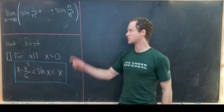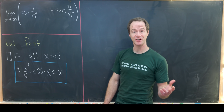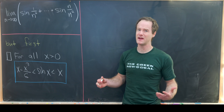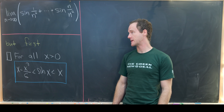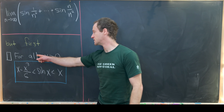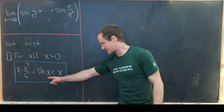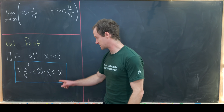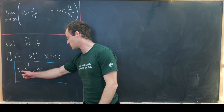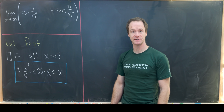Before we directly look at this limit, we're going to need a preparatory inequality, which will make this a little bit easier to calculate. That inequality goes like this: for all x greater than 0, we know that sine of x is less than x, while it is larger than x minus x cubed over 6.